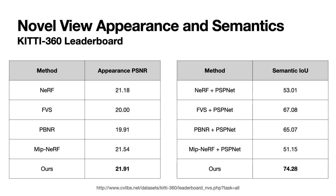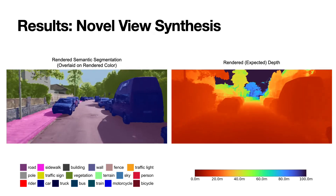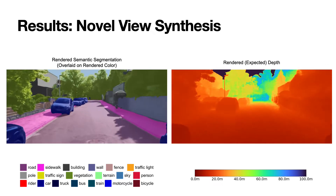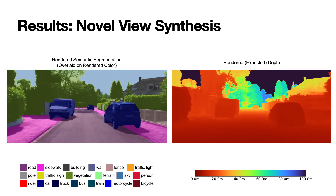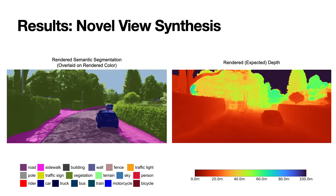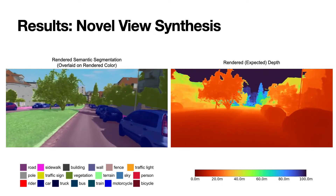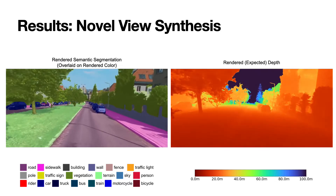We also evaluate our model on the recently released KITTI 360 dataset. Our single model outperforms other baselines for both the tasks of novel view appearance and semantic segmentation. Here we show rendered semantic segmentation and rendered depth images along novel views on a KITTI 360 scene. Note that we only use the forward-facing cameras from the dataset. The rendered semantic segmentations are temporally consistent, which traditional image segmentation models often struggle with. Our model also correctly reconstructs and segments many difficult thin structures like lamp posts and sign symbols.